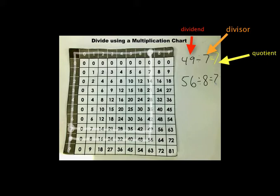25 divided by 5. 5 is our divisor, so we find that on our multiplication chart. We follow it over until you find 25. Once you find 25 you go up. So 25 divided by 5 is 5.